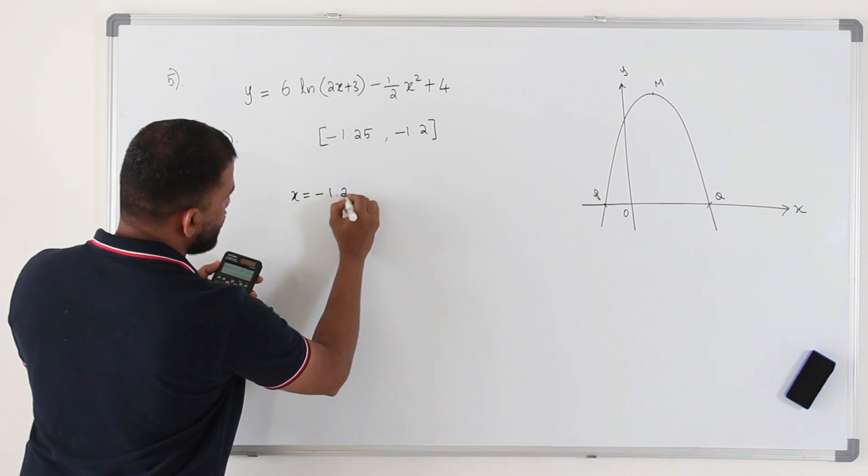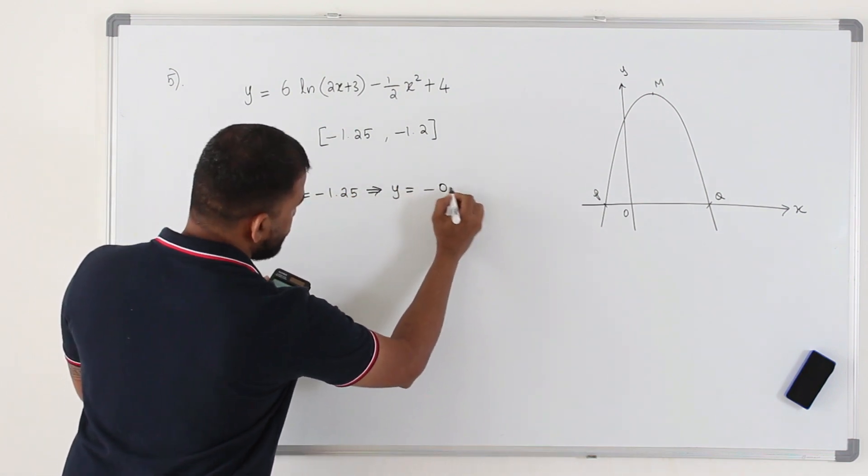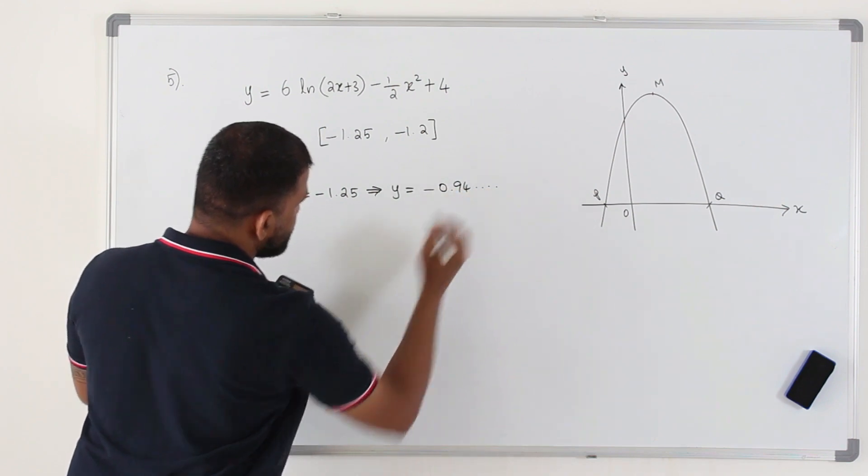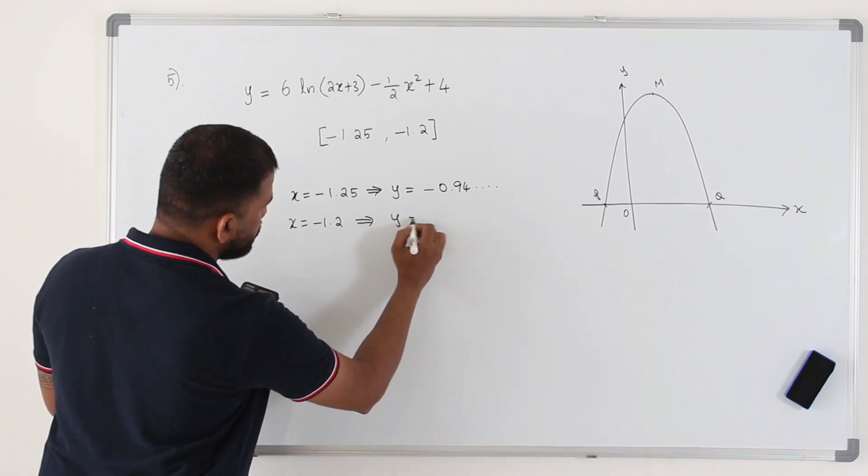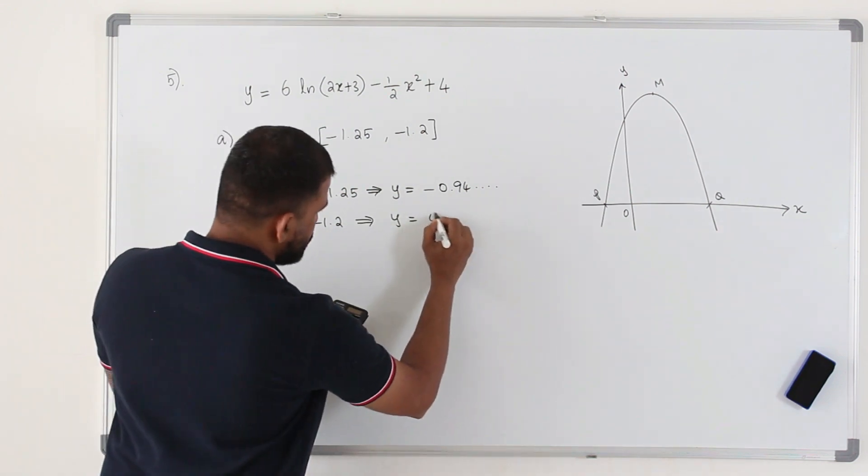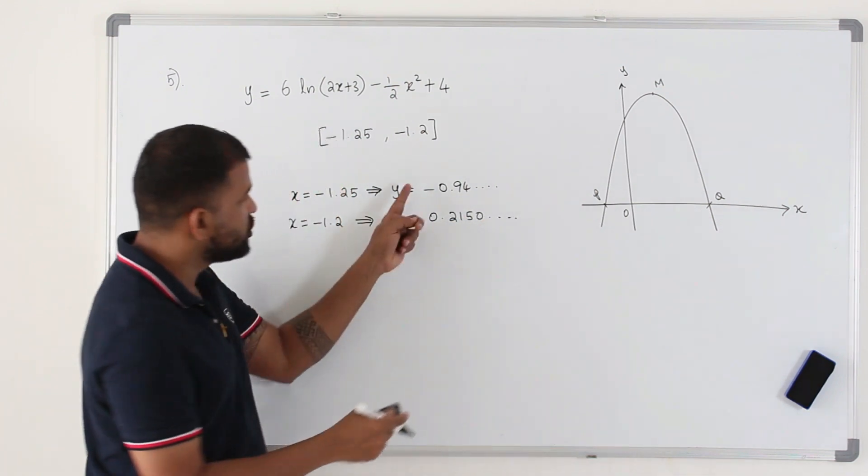So when you sub in this value, when you plug in x is minus 1.25, the value of y is negative 0.9 etc. Now let's sub in negative 1.2 now. You get the value 0.2150 etc. There is a change of sign.